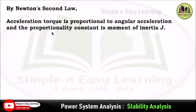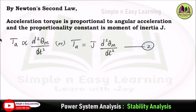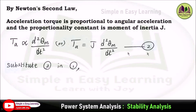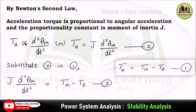By Newton's second law, the accelerating torque is proportional to angular acceleration, with the proportionality constant being the moment of inertia J. So, Ta = J · (d²θm/dt²) — this is Equation 2. Substituting Equation 2 into Equation 1 gives: J · (d²θm/dt²) = Tm − Te, which is Equation 3.